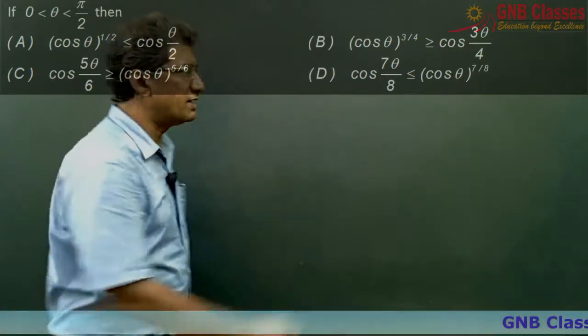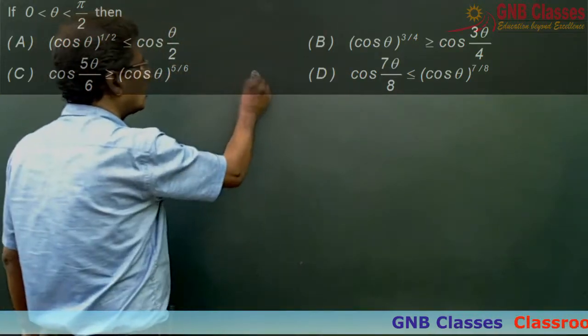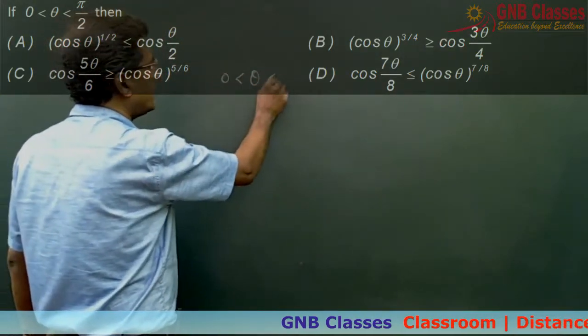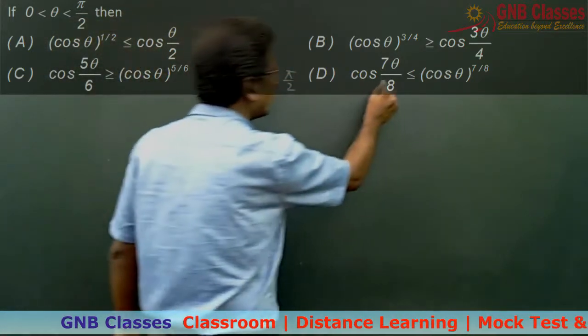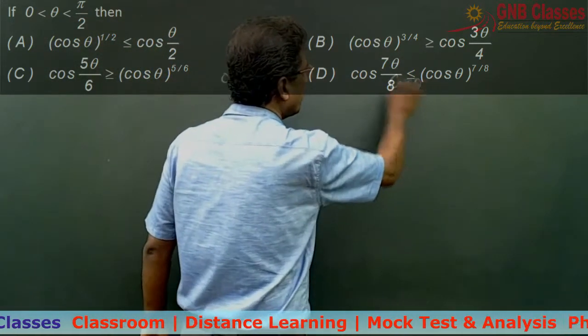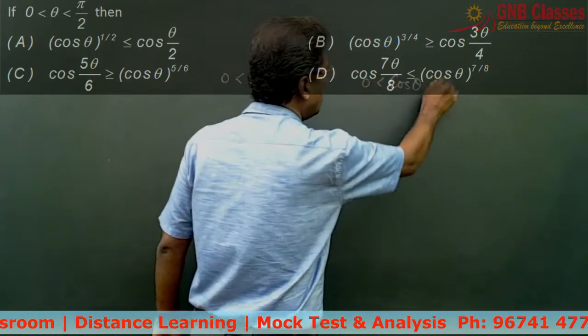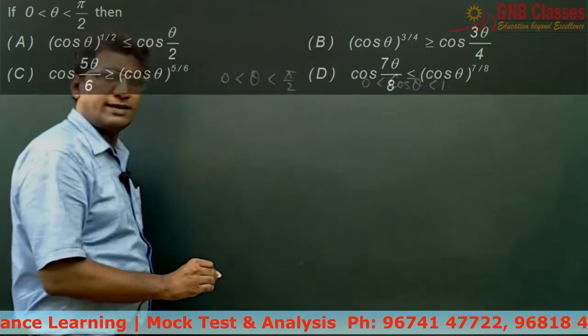Now in this problem they have given us your theta is lying between 0 and pi by 2. So from here we can say that your cos theta is greater than 0 and less than 1. Is it clear?